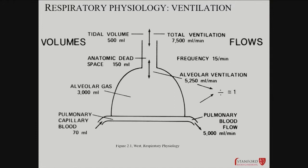The actual gas content in the alveoli per se is about 3,000 milliliters. The pulmonary blood flow is also about five liters per minute — that's typical cardiac output. All the blood goes through the lung.